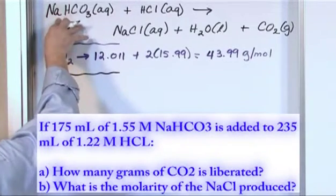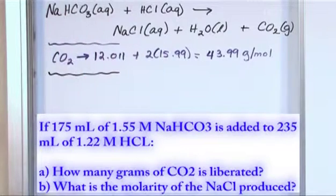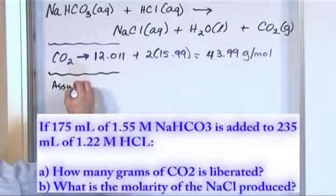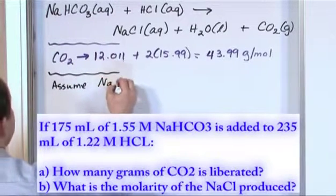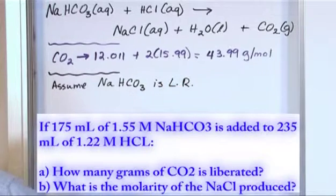Let's do the limiting reactant calculation. We know we're going to start with this guy and make an assumption that he is the limiting reactant, and we'll do the same thing for the other guy. So we'll say assume that the NaHCO3 is the limiting reactant. So let's start with this first.